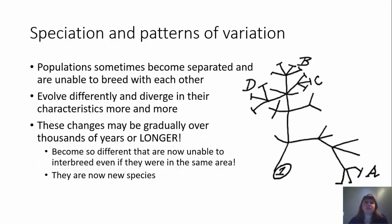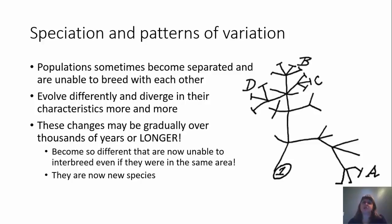Now let's talk about speciation and patterns of variation. This is Darwin's image of speciation. Sometimes populations become separated, and when separated, they are unable to breed with each other. Even though they are populations of the same species, something has separated them. These populations start to evolve differently and diverge in their characteristics more and more over time — gradually over thousands of years or even longer, not within one organism's lifespan. Eventually, these organisms become so different that they are unable to interbreed even if the two groups came back into the same area, and so we classify them as two different species.